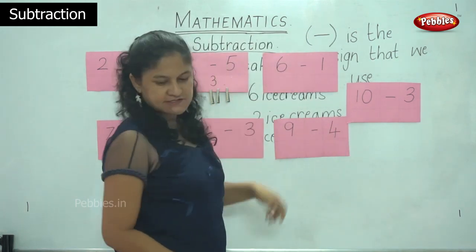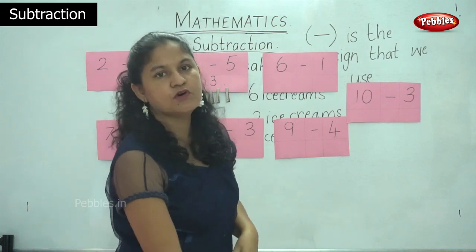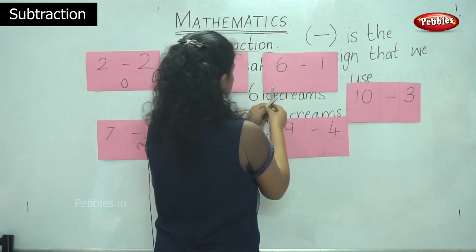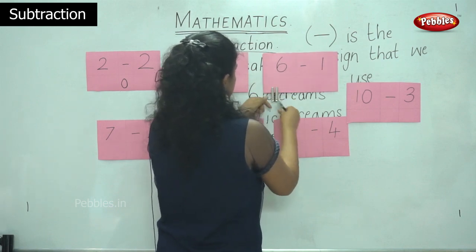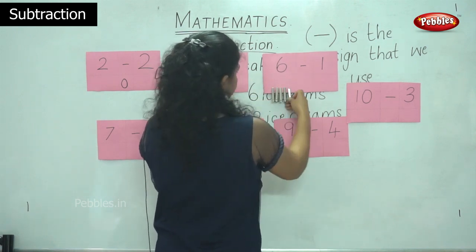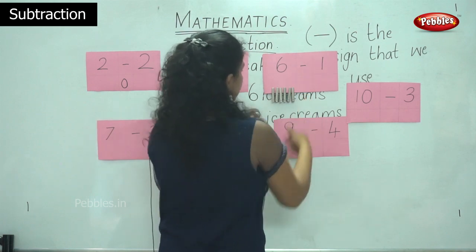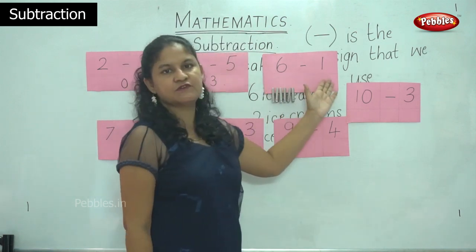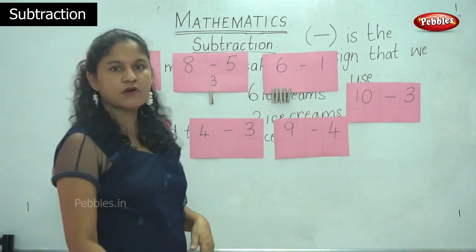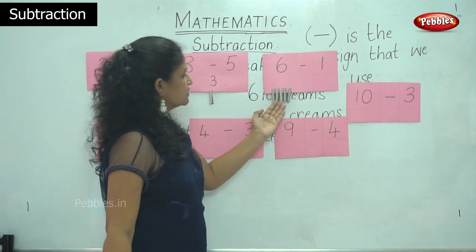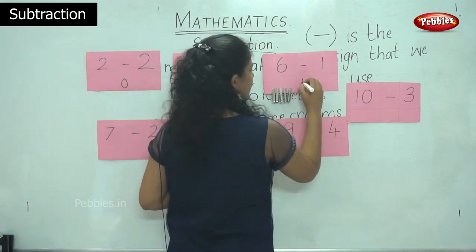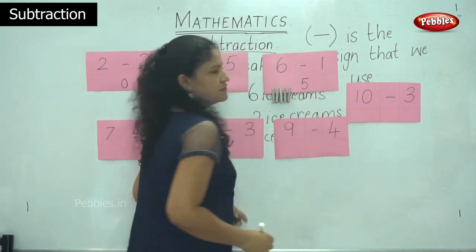So I have number 6 and I'm going to clip on 6 pegs: 1, 2, 3, 4, 5, 6. I have 6 pegs and I have to subtract 1, so I take away 1. The answer is 5. So 6 take away 1 gives me number 5.